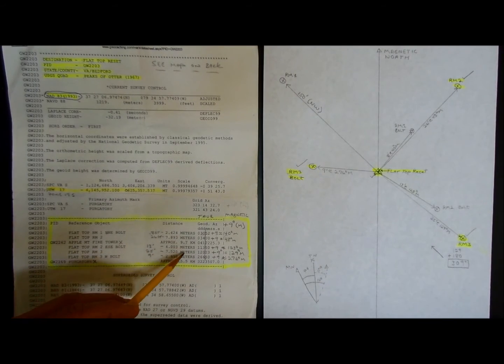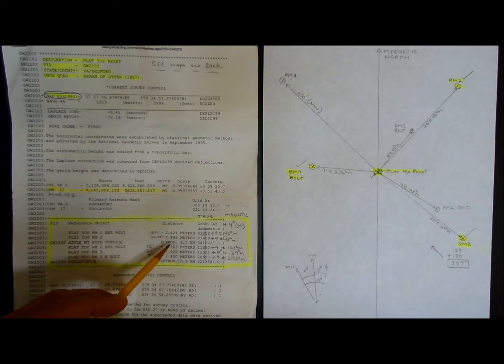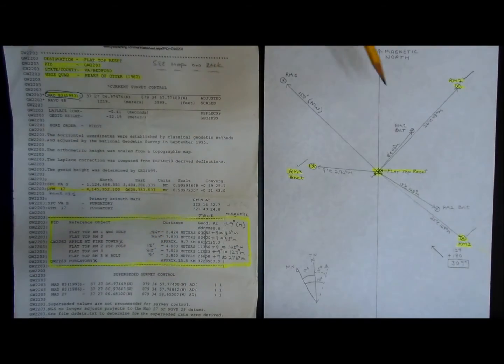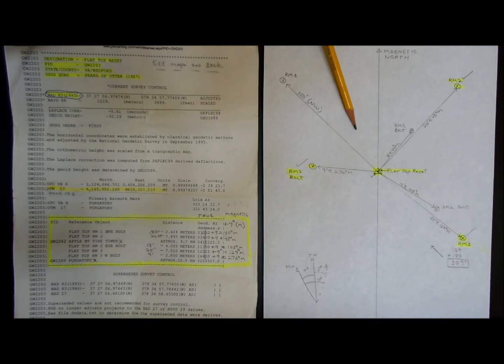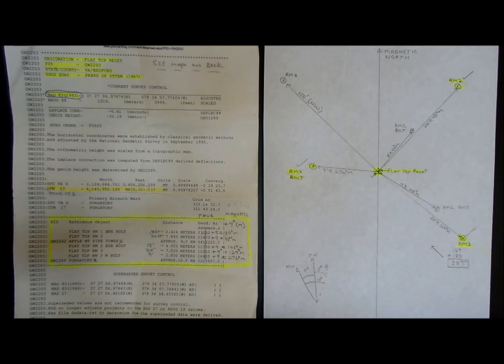But all these other ones are on the same summit, and they're just a few meters away. So if you draw this diagram for all these different objects, you'll have a map that you can use when you get up to the summit and actually start looking for these.